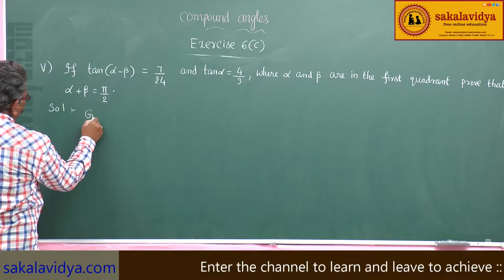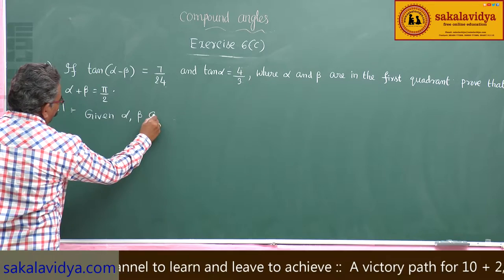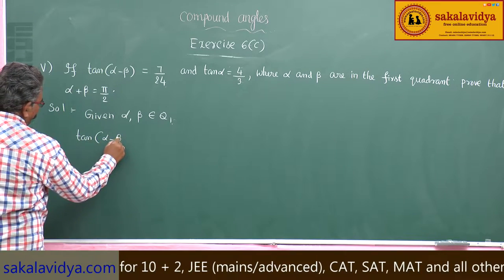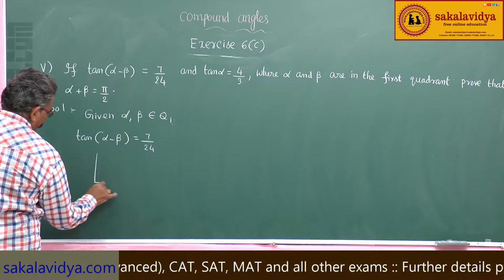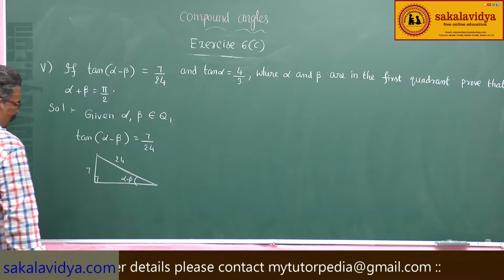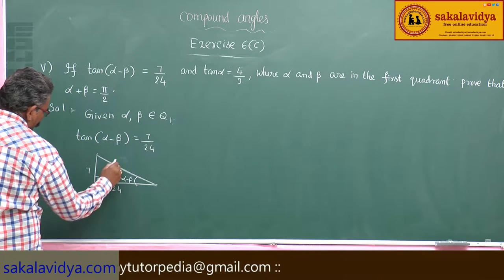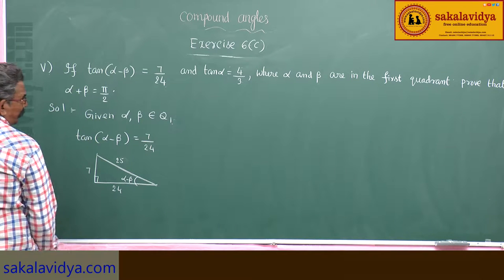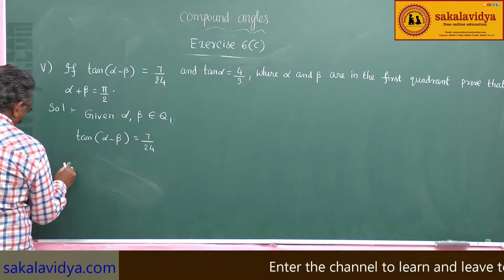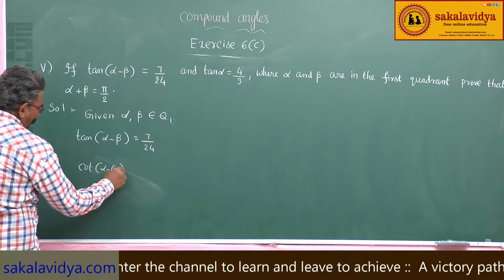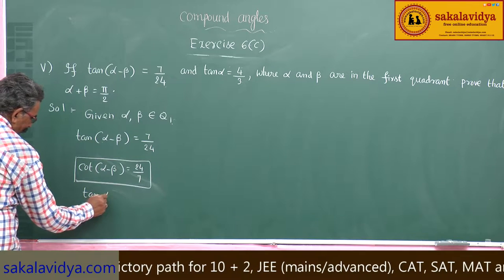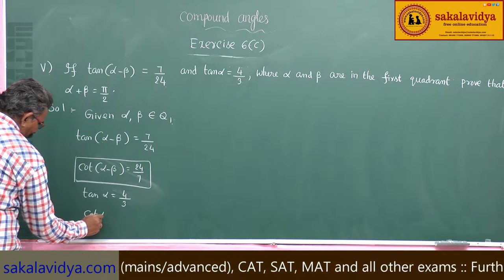Given α, β belong to the first quadrant. From the given data: tan(α - β) = 7/24, so cot(α - β) = 24/7 (reciprocal). Similarly, tan α = 4/3, so cot α = 3/4.